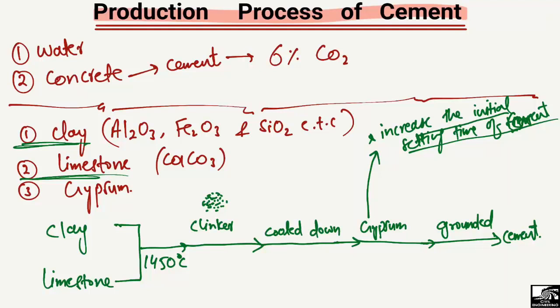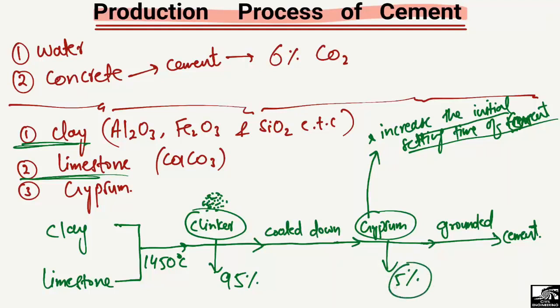If we look at the numbers, cement is composed of two components — clinker and gypsum. Cement contains 95% clinker and 5% gypsum. So only 5% of gypsum is added in the production process of cement.